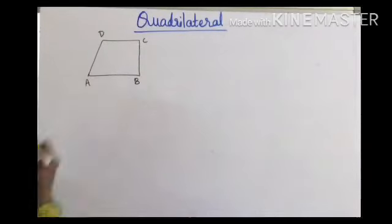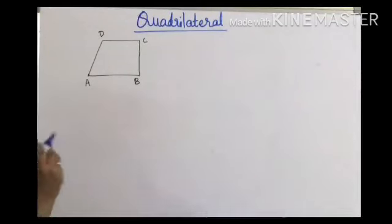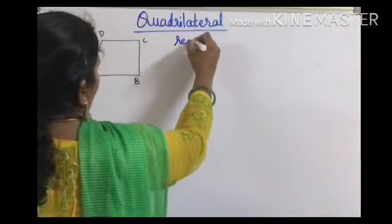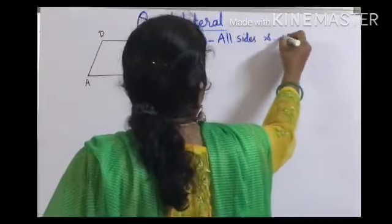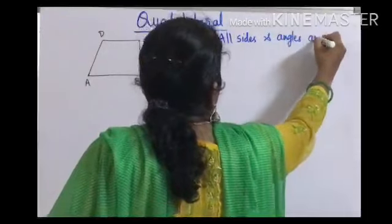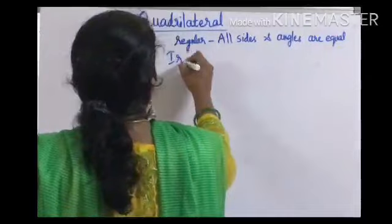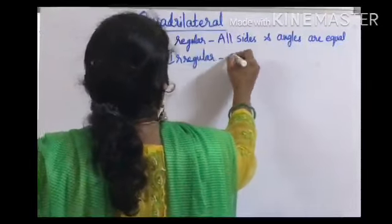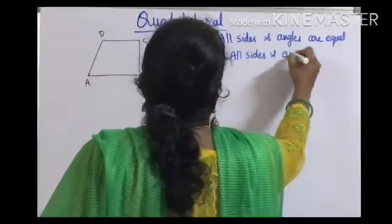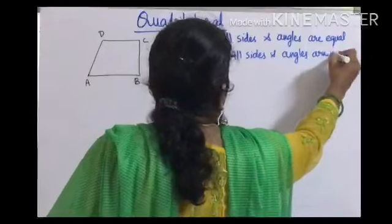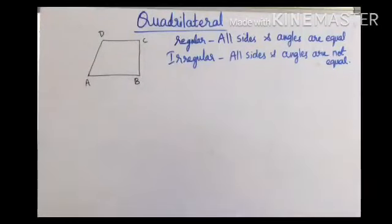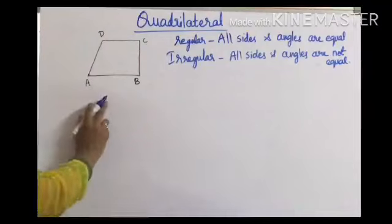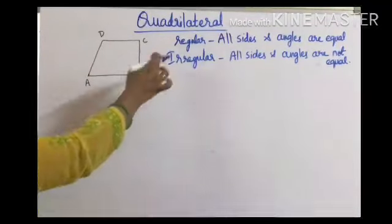Now, is a quadrilateral a regular or irregular figure? Regular means all sides and angles are equal. Irregular is the opposite — all sides and angles are not equal. So a quadrilateral can be regular or irregular.